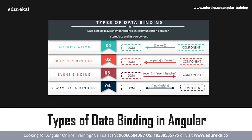Two-way data binding, on the other hand, allows synchronization of data so that views can be updated using the models and models can be updated using the views. This means your application will be able to share information between a component class and its template.